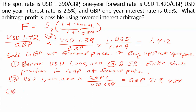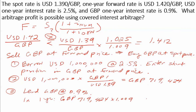Now that we have British pounds, what do we do for the next year? We invest the pounds — we lend them at the interest rate of 0.9%. In one year, we'll have 719,424 British pounds times 1.009, which is 1 plus the interest rate, giving us 725,899 British pounds.